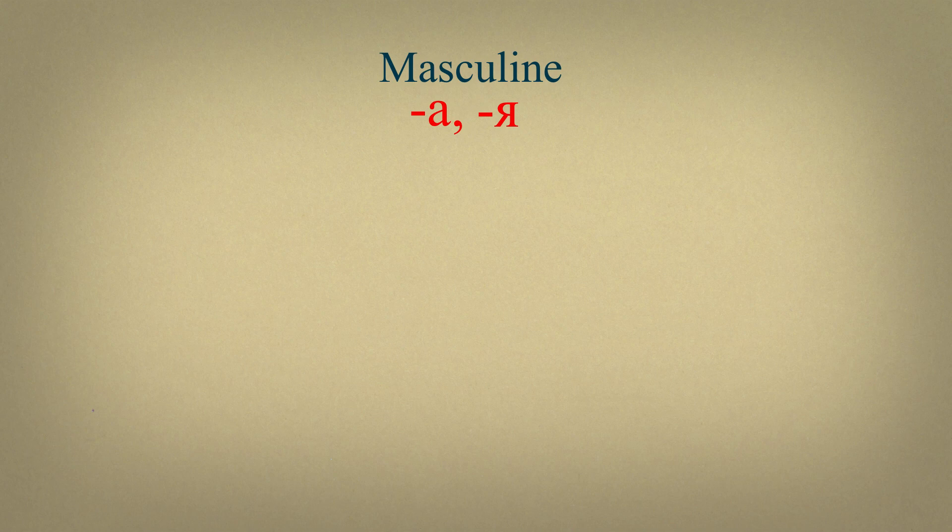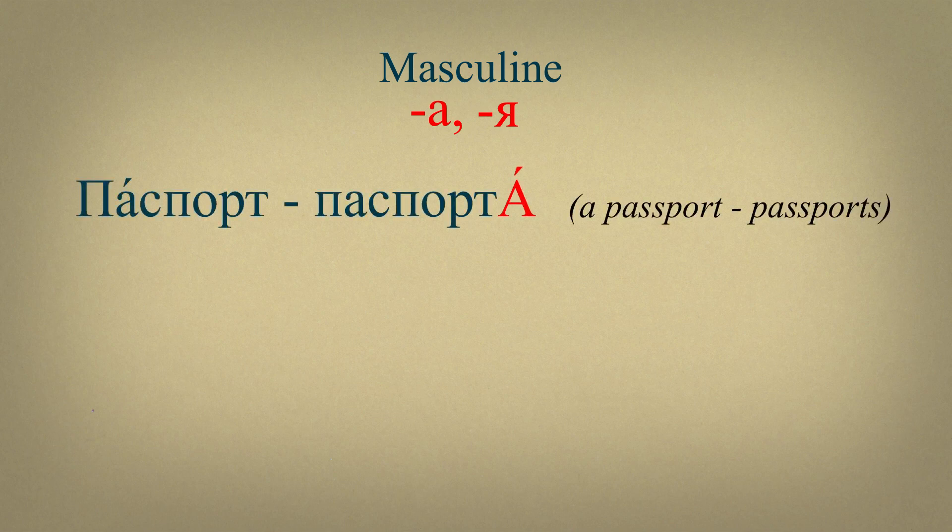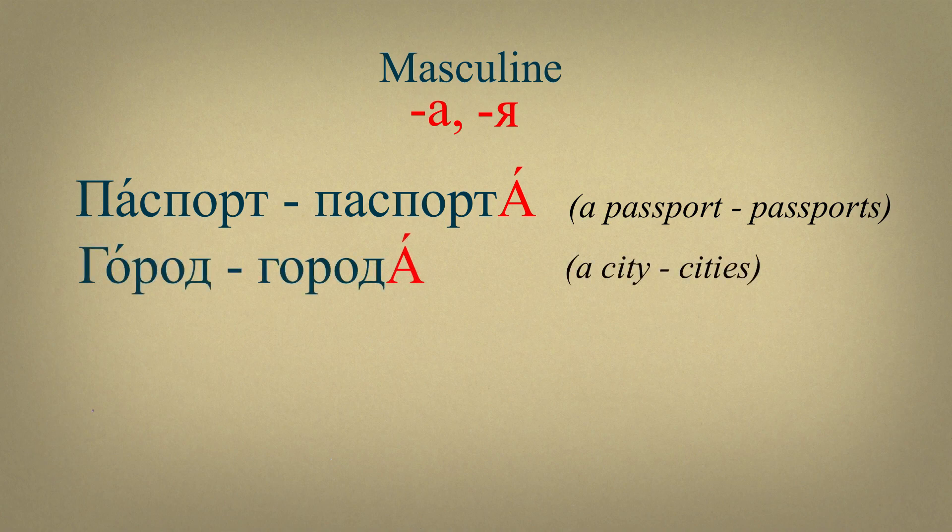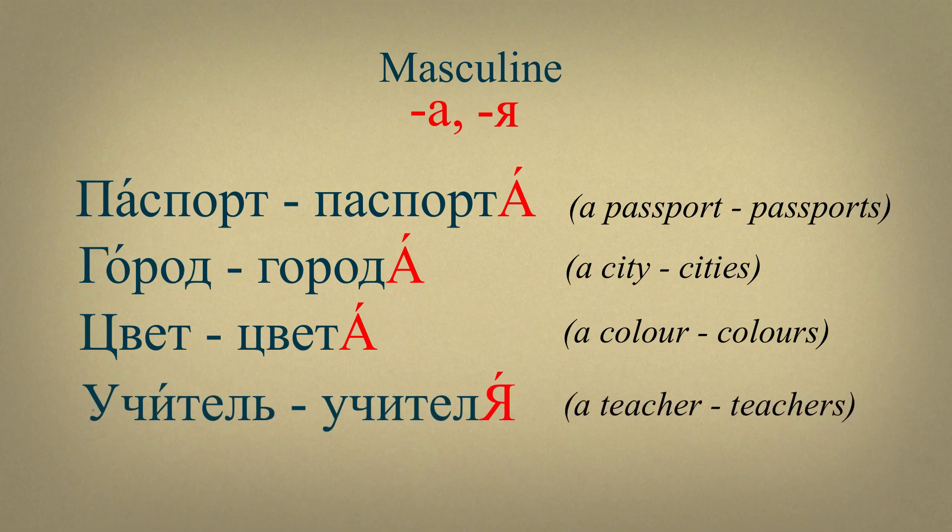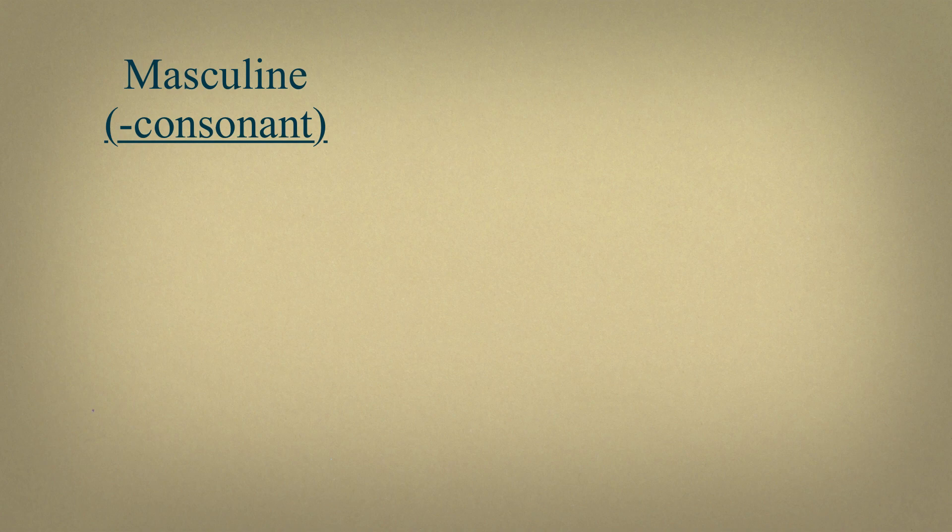Some nouns of masculine gender have an ending А or Я in plural form. In this case, the stress falls on an ending. For example, паспорт, паспорта. Город, города. Цвет, цвета. Учитель, учителя.